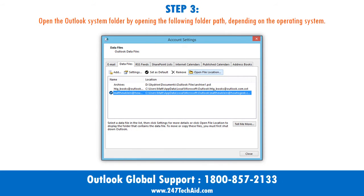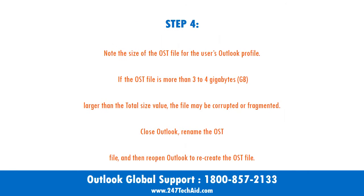Step 3: Open the Outlook system folder by opening the following folder path, depending on the operating system. Step 4: Note the size of the OST file for the user's Outlook profile. If the OST file is more than 3 to 4 gigabytes (GB) larger than the total size value, the file may be corrupted or fragmented.